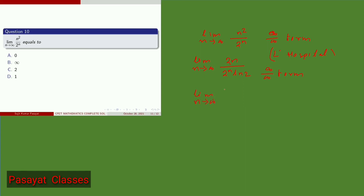Applying L'Hôpital's rule a second time gives the limit as n tends to infinity of 2 / (ln 2)² · 2^n, which equals 2 / ((ln 2)² · 2^n). As n → ∞, this goes to 0. So option A is correct. If you like my videos, please subscribe to my channel. In the next video I will solve more questions, so stay tuned. Thank you.